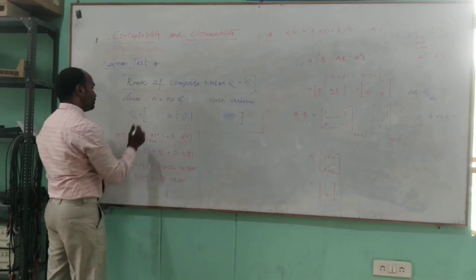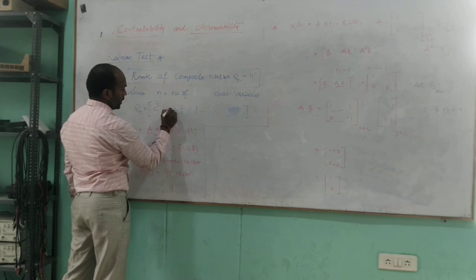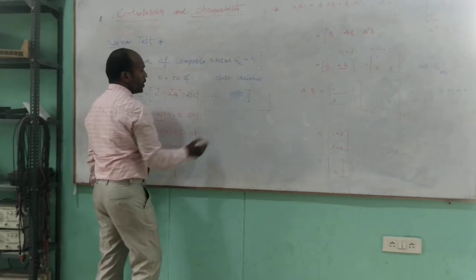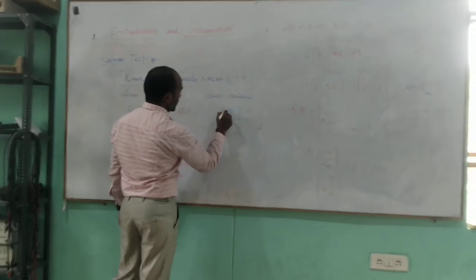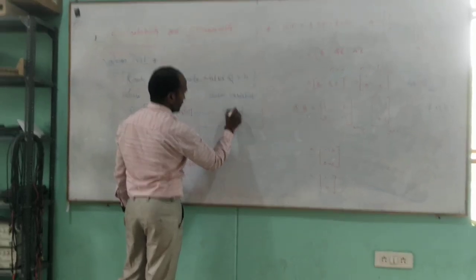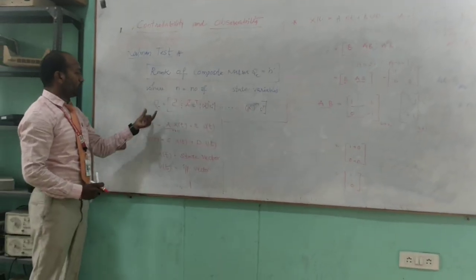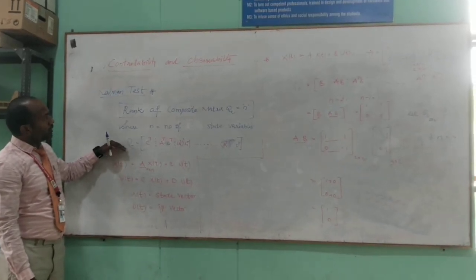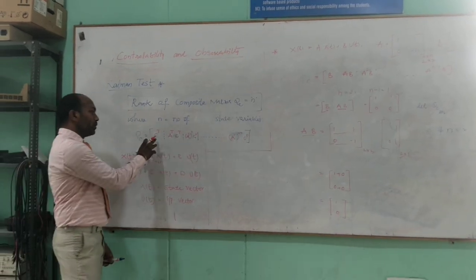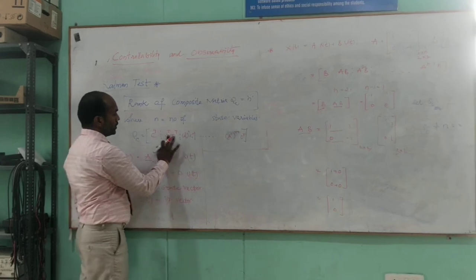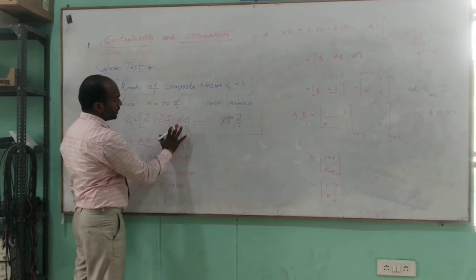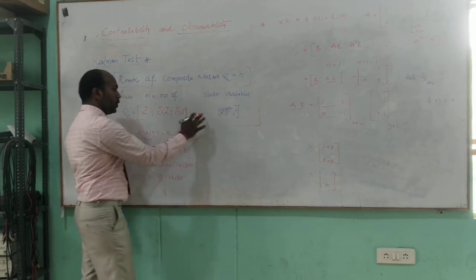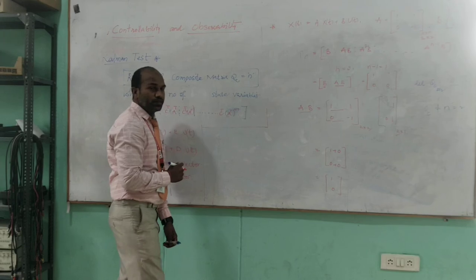The structure of the composite matrix for observability starts with C transpose, followed by A-transpose times C-transpose, then A-transpose squared times C-transpose, and so on. The last column is A-transpose to the power N minus 1 times C-transpose. So this is the structure of the composite matrix Qo used to find whether the system is observable or not.